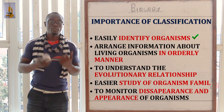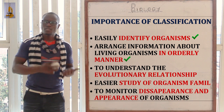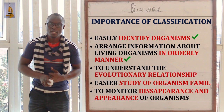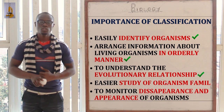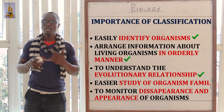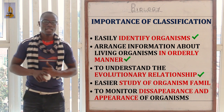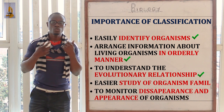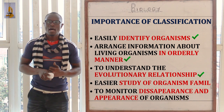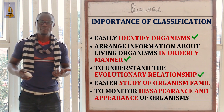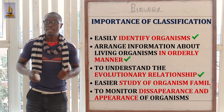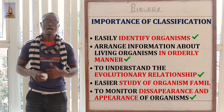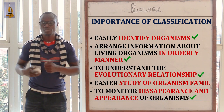Another importance of classification is that information about living organisms can be arranged in an orderly manner. Also, in classification, we get to understand more about the evolutionary relationships of different organisms. Additionally, classification allows us to study the family lineage of organisms very easily. Finally, in classification, we get to monitor the appearance and disappearance of organisms.